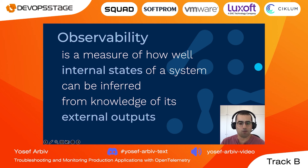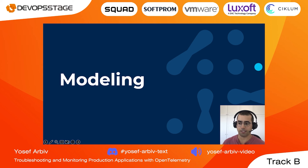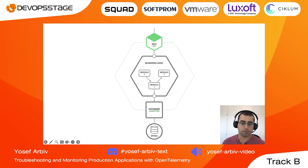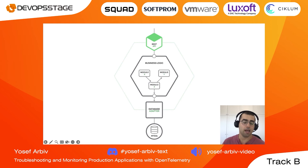What does this mean in the context of software development? We will have three main challenges that observability can help us with. The first challenge is modeling our system. Even a simple web application running on a single host, talking to a database and having an API, can be in many different states. And even in such a small monolith application, we can have many different states.